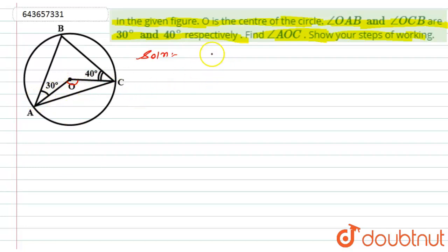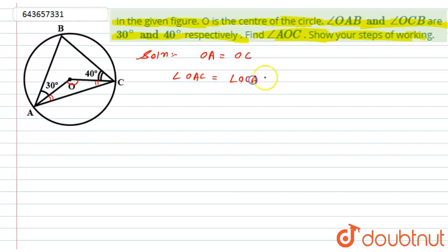OA and OC are equal because they are radii of the same circle. Since OA equals OC, their opposite angles are equal — that is, angle OAC equals angle OCA, because the opposite angles of equal sides are equal.